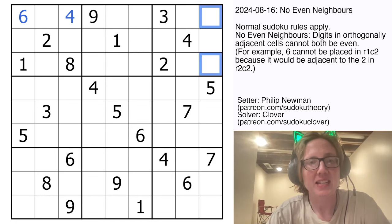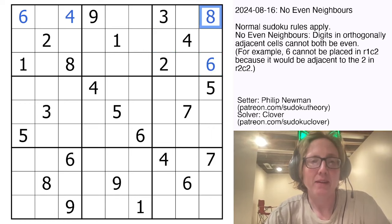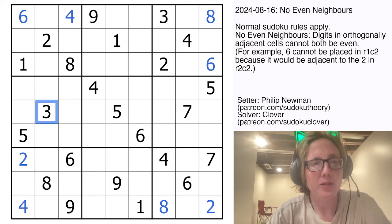We need to place a 6 and an 8 in this region. They can't go in any of the cells that touch the 4, so they'll have to go here and here. We need a 2 and an 8 here, and a 2 and a 4 here.